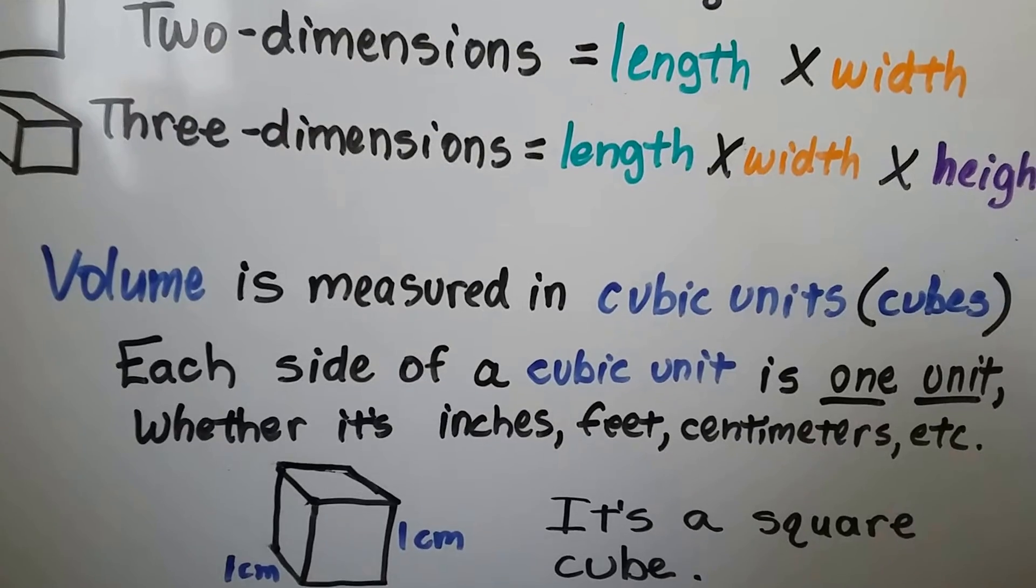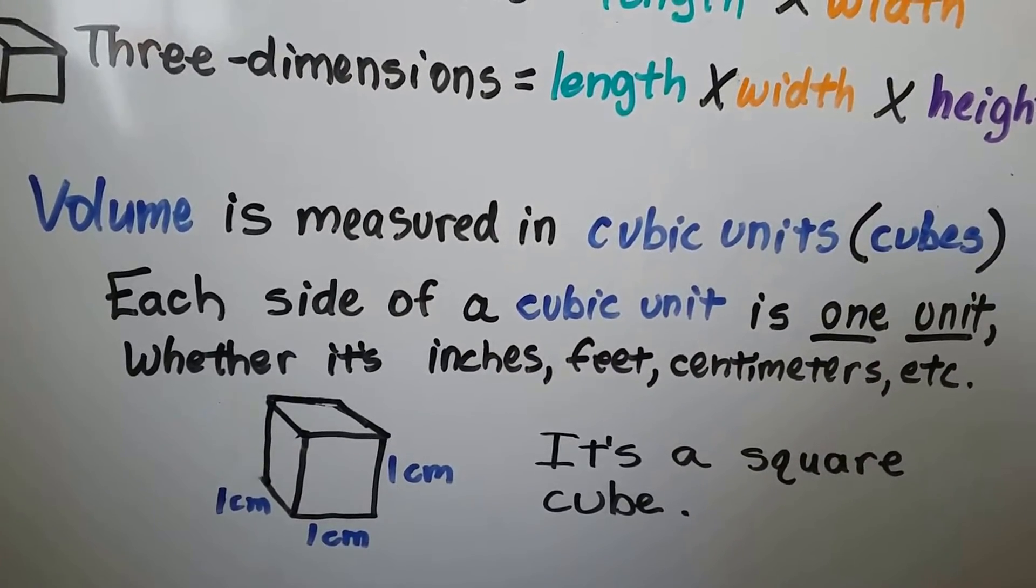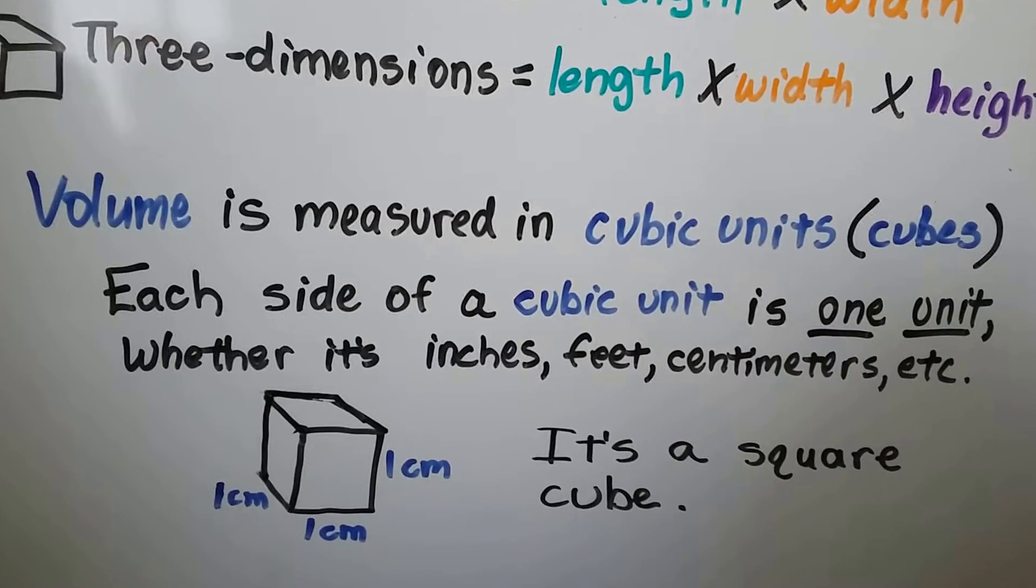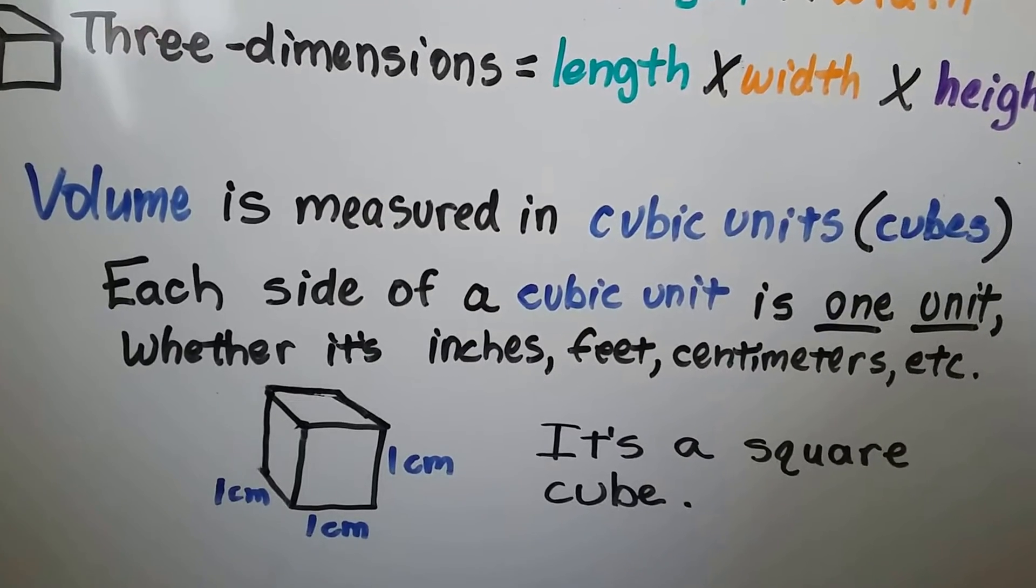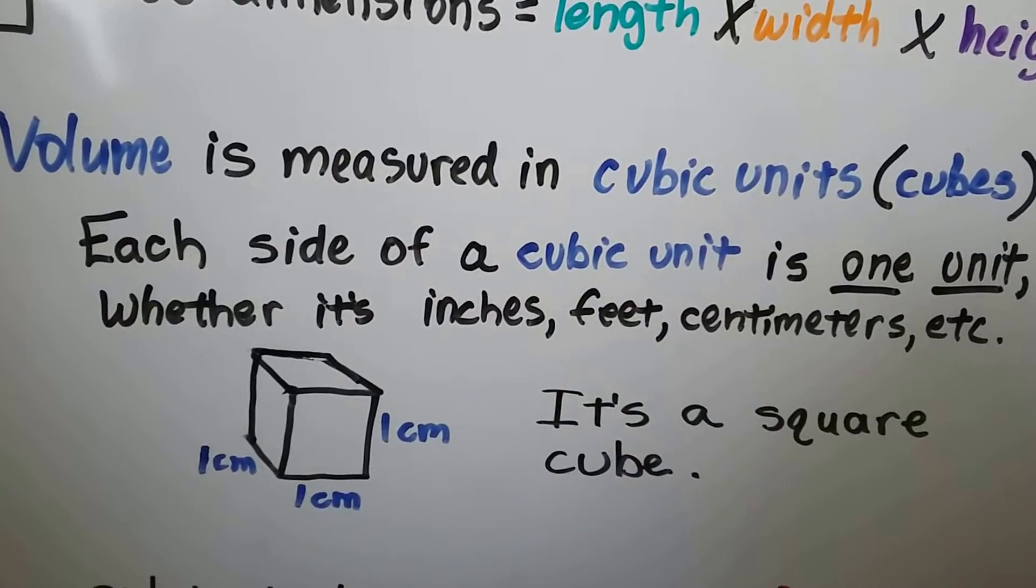Volume is measured in cubic units, cubes, and each side of a cubic unit is one unit. Doesn't matter whether it's inches, feet, centimeters, meters, whatever. Every side will have the same measure in a cubic unit.